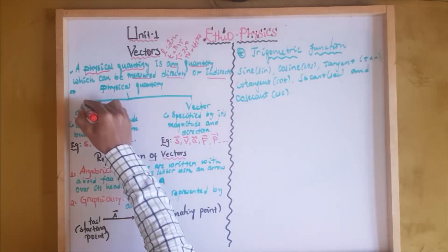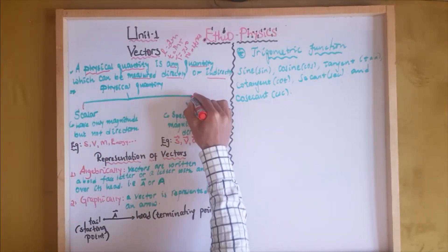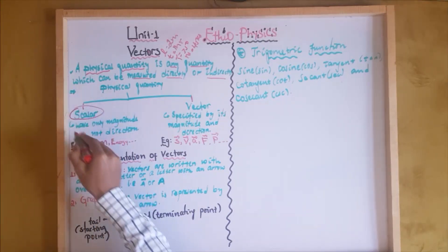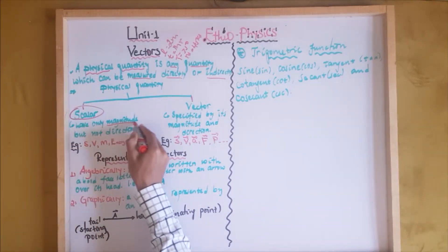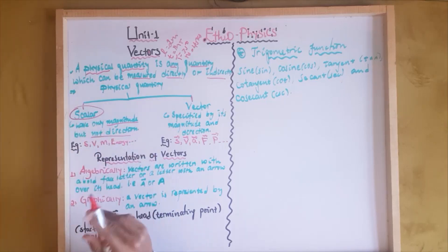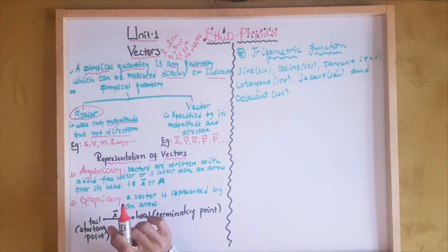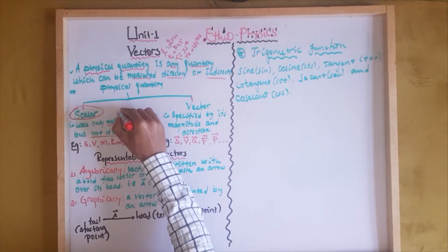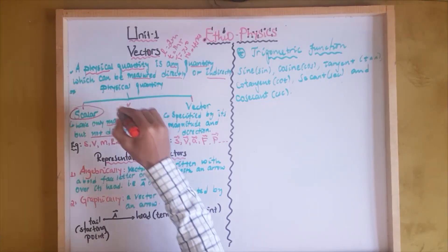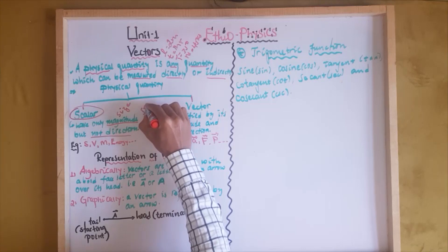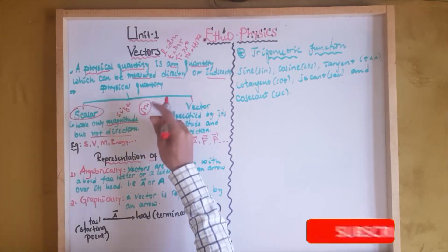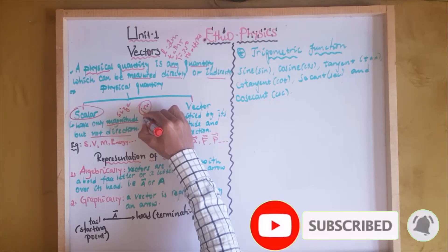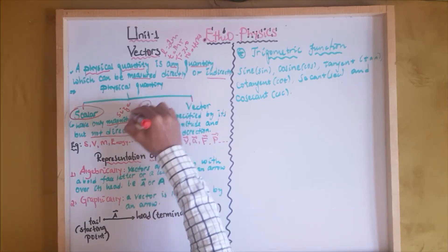Scalar quantities are physical quantities that have only magnitude without direction. Magnitude is a number with units — that is known as magnitude.